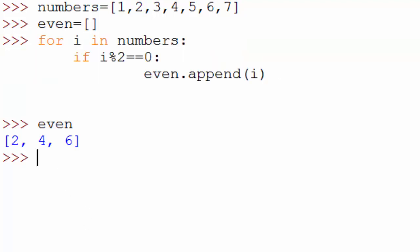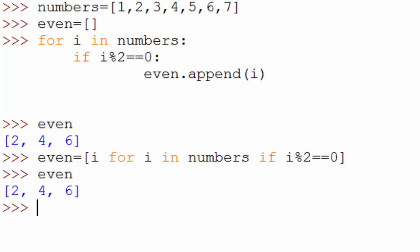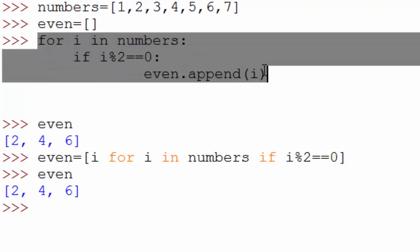List comprehension provides you a way of writing the same code in one line. You can do even equals i for i in numbers if i percent 2 equals 0 and when you do that you get the same result. So this thing is essentially same as this three line of code.